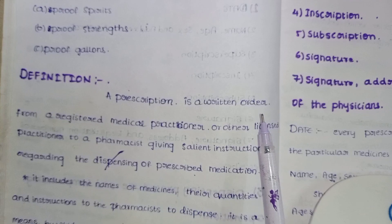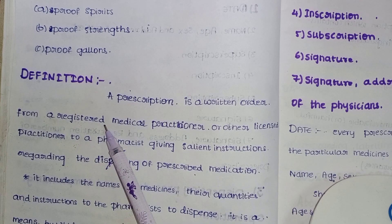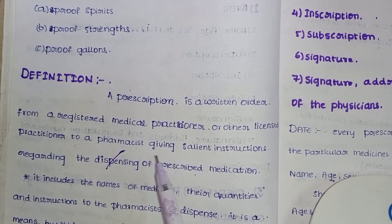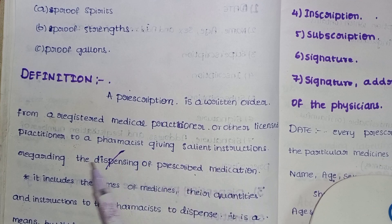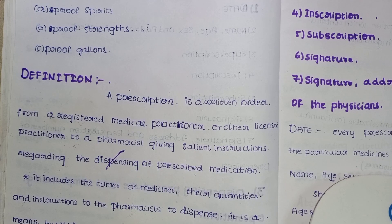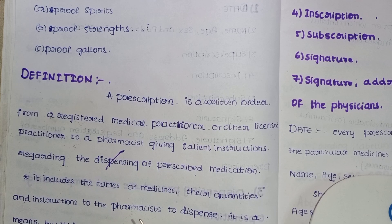A prescription is a written order form from a registered medical practitioner or other licensed practitioner to a pharmacist, giving salient instructions regarding the dispensing of prescribed medications. Whenever we reach out to the doctor, the medical practitioner — who is nothing but the doctor or a well-trained person — for example, licensed practitioners such as ayurvedic members who have completed their ayurvedic education, these are the licensed practitioners. They are writing the prescription for the pharmacist.